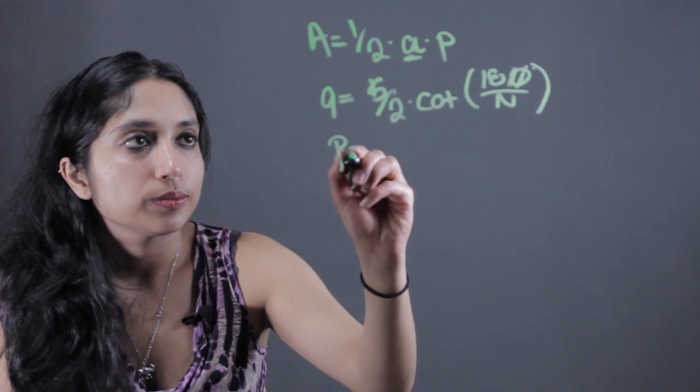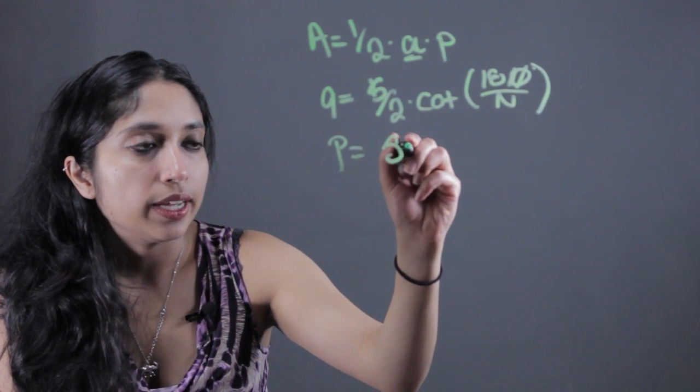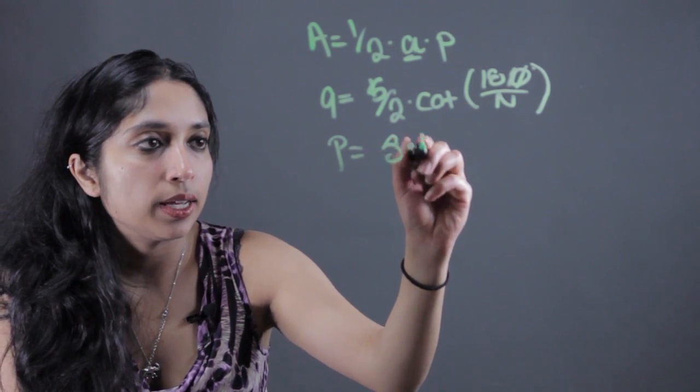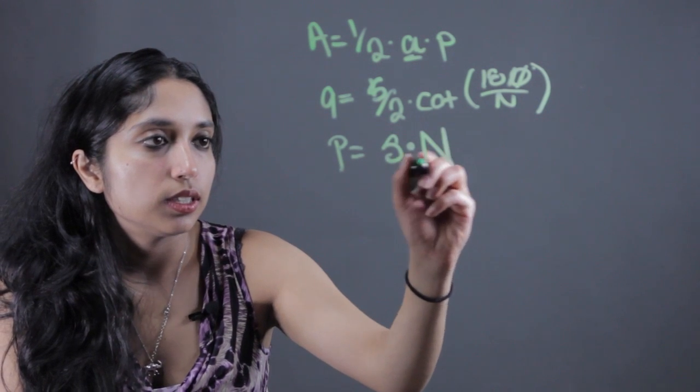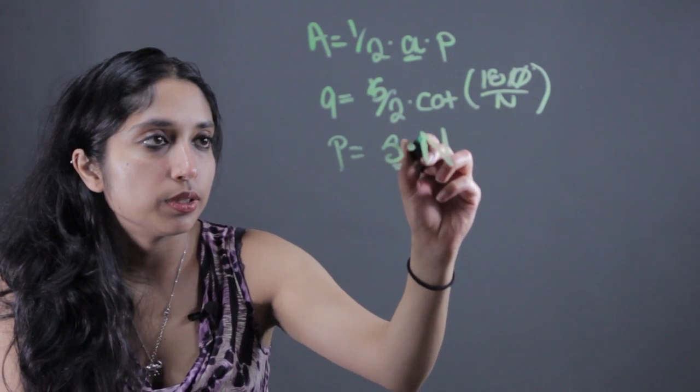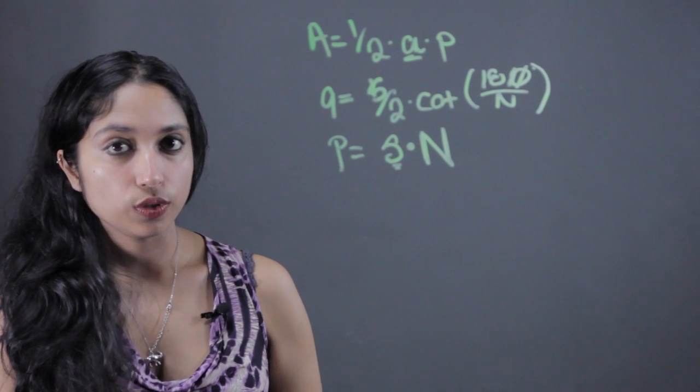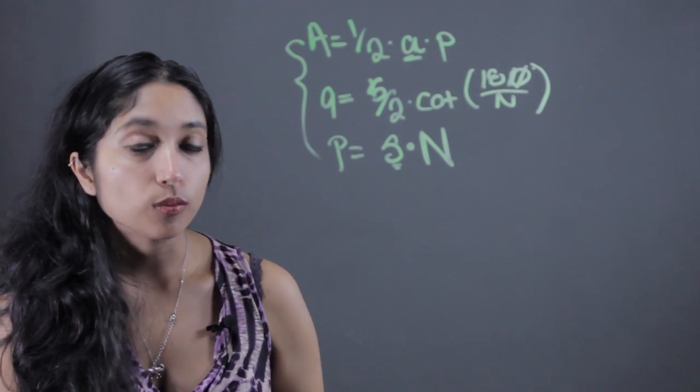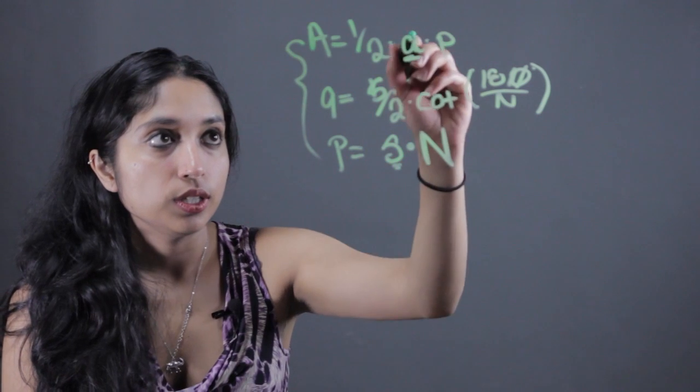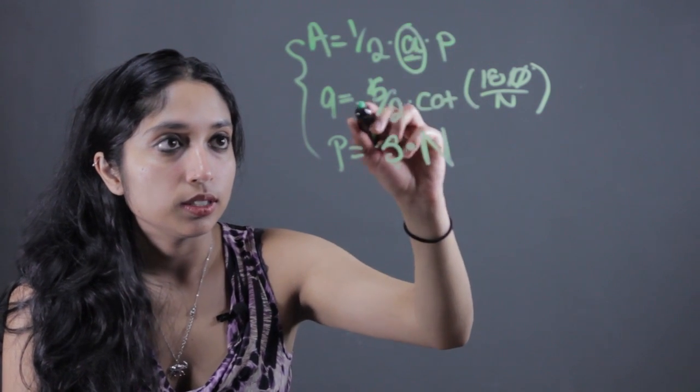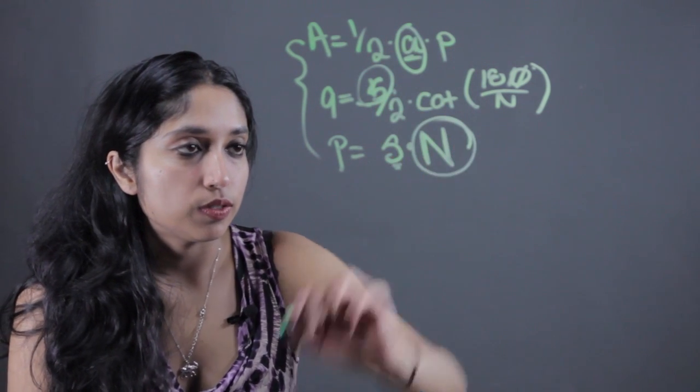We know the perimeter is equal to sides times length of the side times the number of sides. So if you look here, we have three equations and we have three unknowns: the apothem, the sides, and the number of sides.